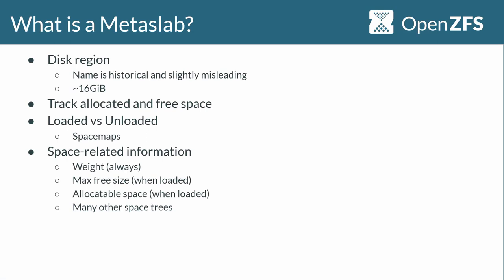A metaslab in ZFS is a region of the disk and the data structures associated with it. The name sounds like it has something to do with slab allocators — that's historically true but not anymore, so the name is slightly misleading. A metaslab represents about 16 gigabytes of free space on the disk, and there are about 200 of them on any given disk, varying with disk size.